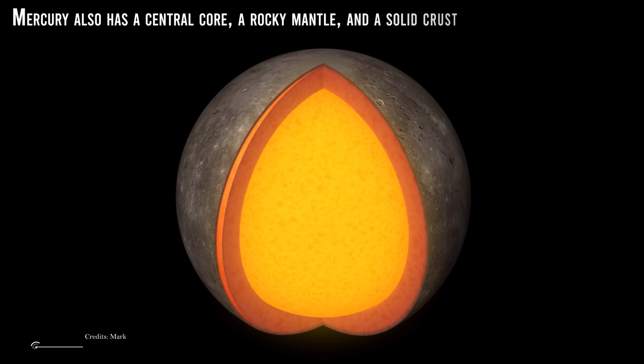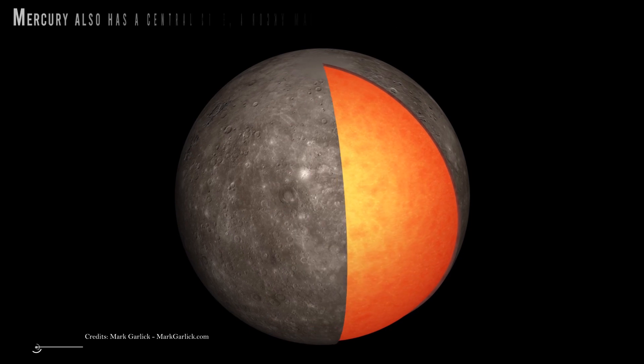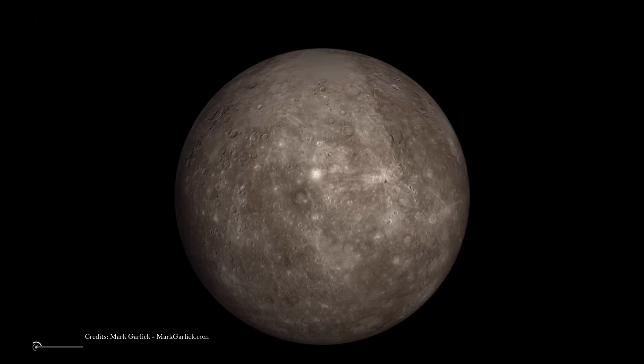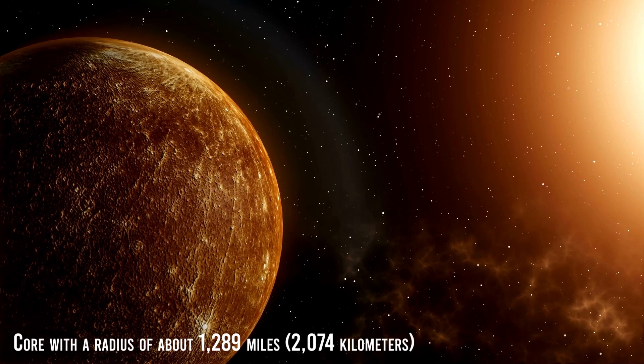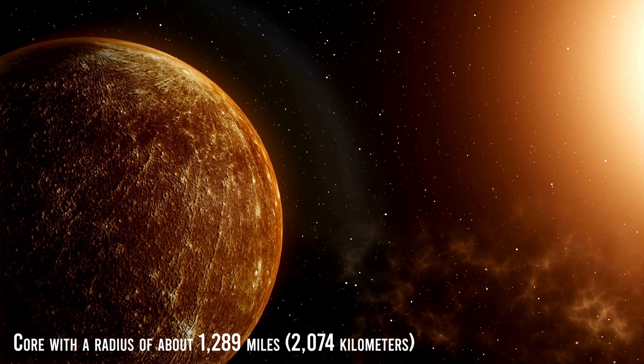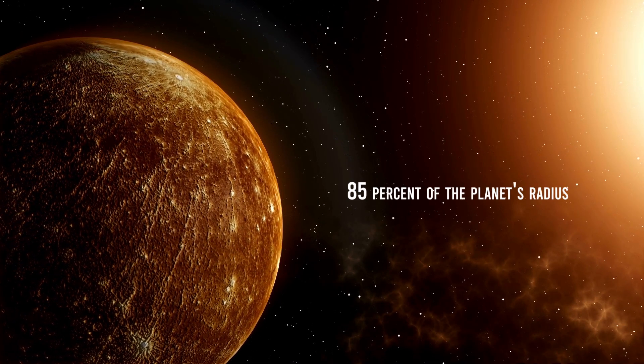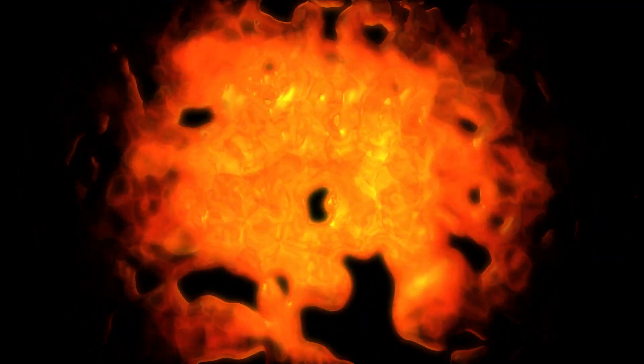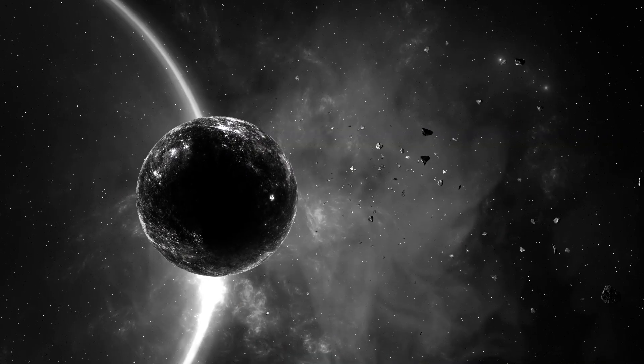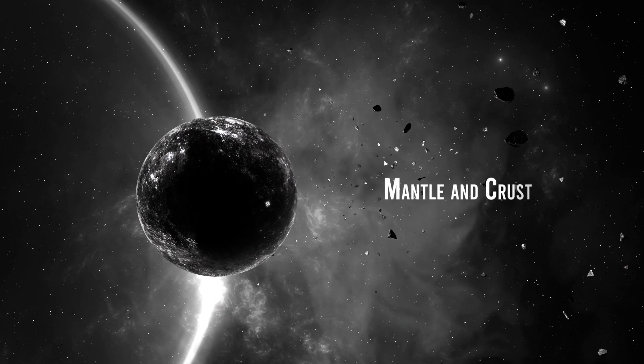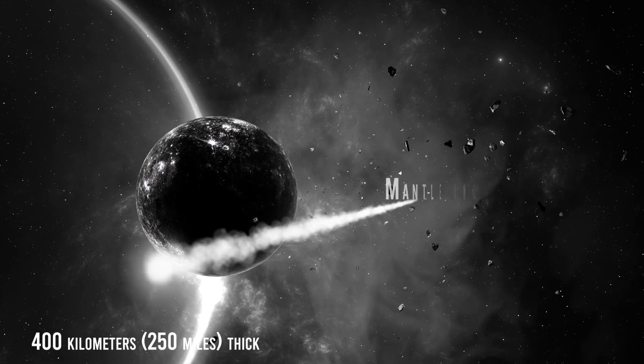Speaking of Mercury, it also has a central core, a rocky mantle, and a solid crust, just like Earth. It's actually the second densest planet after Earth. It has a large metallic core with a radius of about 1,289 miles or 2,074 kilometers, about 85% of the planet's radius. There is evidence that it is partially molten or liquid. Mercury's outer shell, comparable to Earth's outer shell, called the mantle and crust, is only about 400 kilometers or 250 miles thick.